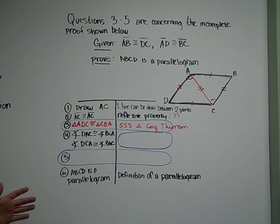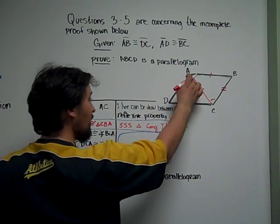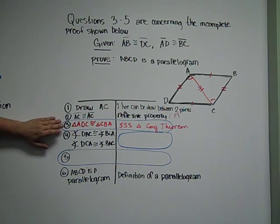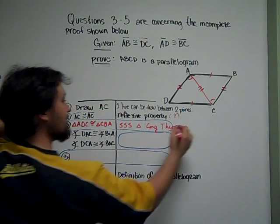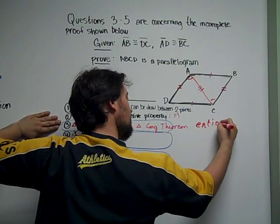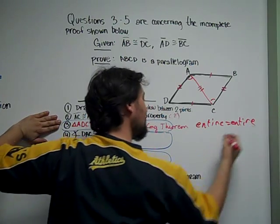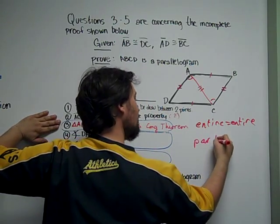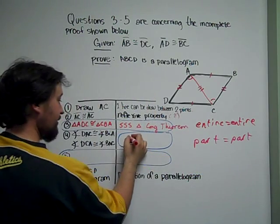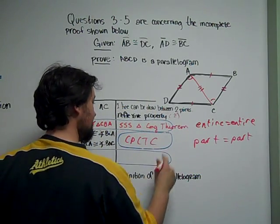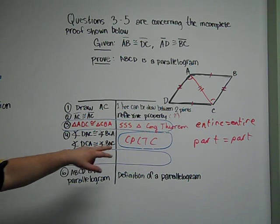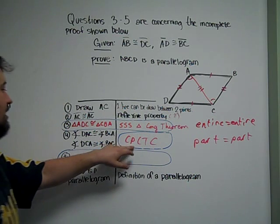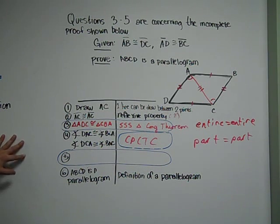What this is actually based on is: since we have no parallel lines whatsoever, a smaller part of a triangle equals a smaller part of the other triangle because the entire triangle equals the entire triangle. So it's a matter of the whole equaling the whole, and then you can say the part equals the part. That's what we're saying here with CPCTC — one of the more fun things to say in geometry.